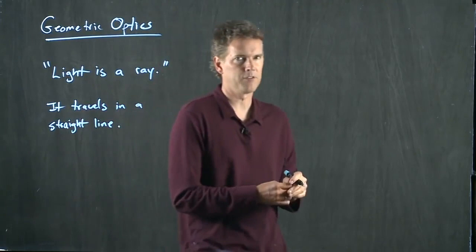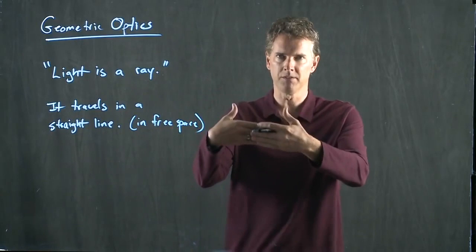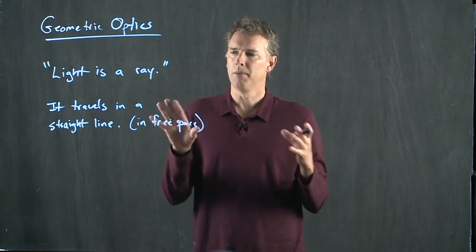Okay, now there's a caveat there, which is the following: in free space. Pretty soon, we're going to talk about what happens when it meets up with glass or water, and then you can see that the ray will actually bend. But in free space, light travels in a straight line. It's a ray.